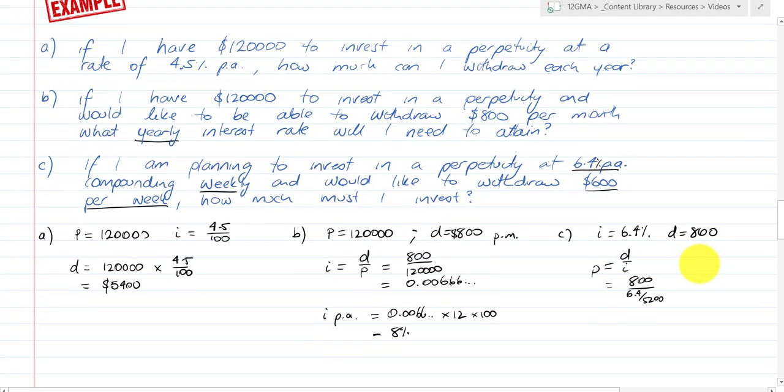This will give us a correct P value. I take that calculation and P comes out as $487,500. If you invested that at that interest rate, you would be able to withdraw $800 per week.